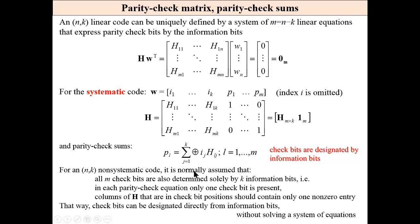For (n,k) non-systematic code, it is normally assumed that all m check bits are also determined solely by k information bits, i.e. in each parity check equation only one check bit is present.